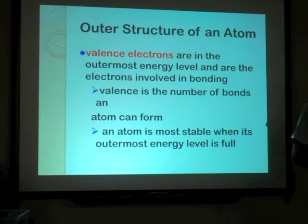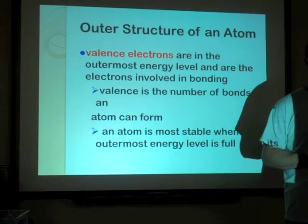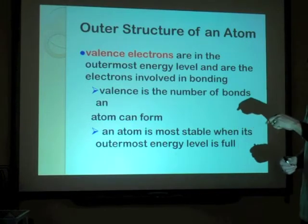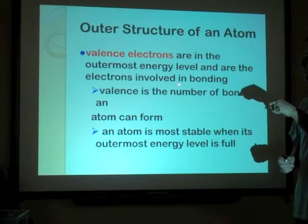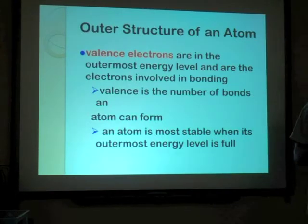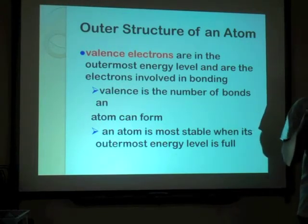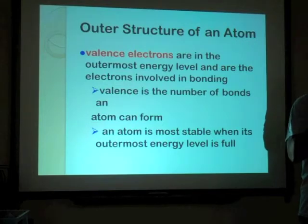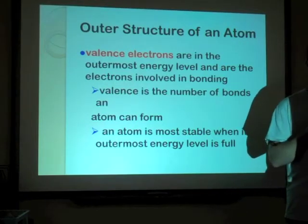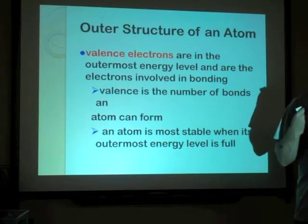Valence electrons are the outermost energy level and are the electrons involved in bonding. Y'all probably haven't heard of bonding before. The best way to understand bonding is it's almost like two Legos sticking together. When atoms connect together, we get compounds — plastics, wood, paper, you guys — everything is made of compounds unless it's a pure element like gold, silver, copper, or carbon.